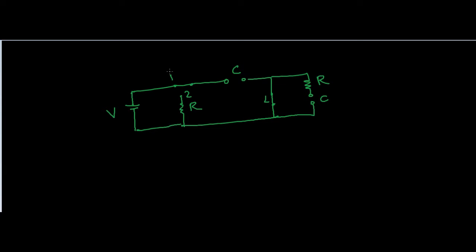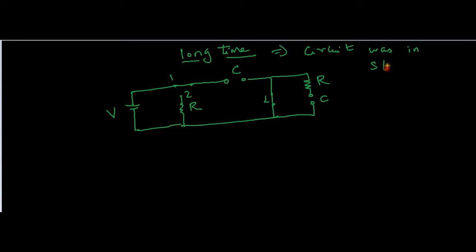What they have told is the switch was at position 1 for a long time, which means that the circuit was in steady state. In order to solve these problems when the circuit is in steady state, we need to understand what is the behavior of the capacitor and inductor when the circuit is in steady state.